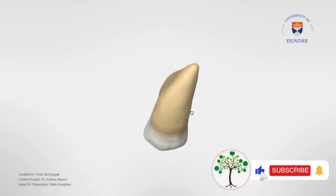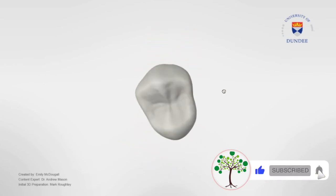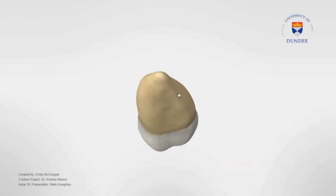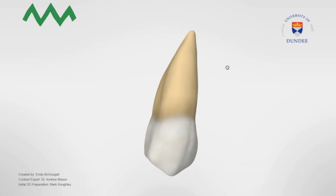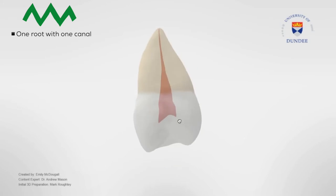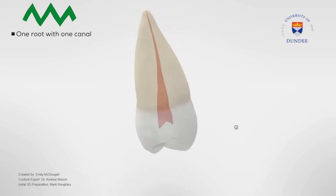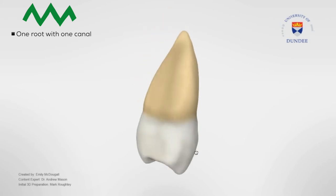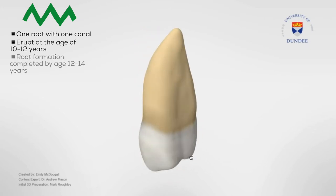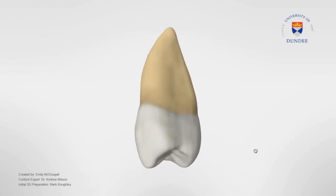This tooth resembles the first premolars in both form and function, but both cusps are less sharp than those of the maxillary first premolars. They have one root and one canal, but it is not unusual to find them with two roots. They erupt at the age of 10 to 12 years, with their roots being completely formed by the age of 12 to 14.